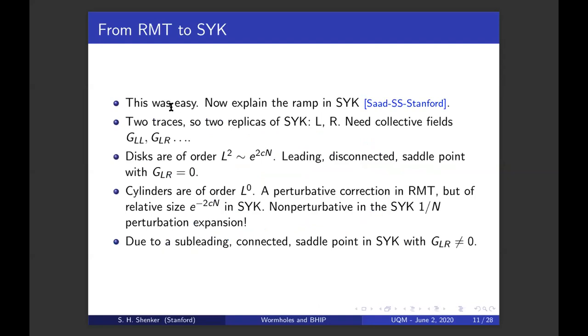But now we can explain the ramp in SYK, or we can try to. It's two traces. So we need two replicas of SYK, call them left and right. And you need collective fields, G left left, G left right, G right right, and so on. And the disks are of order e to the N. This is the leading disconnected saddle point, where G left left does something. G right right does something. But G left right is zero. Cylinders are of order L to the zero. This is a perturbative correction in random matrix theory that we can understand with Feynman diagrams, but it's a relative size e to the minus two N in SYK.